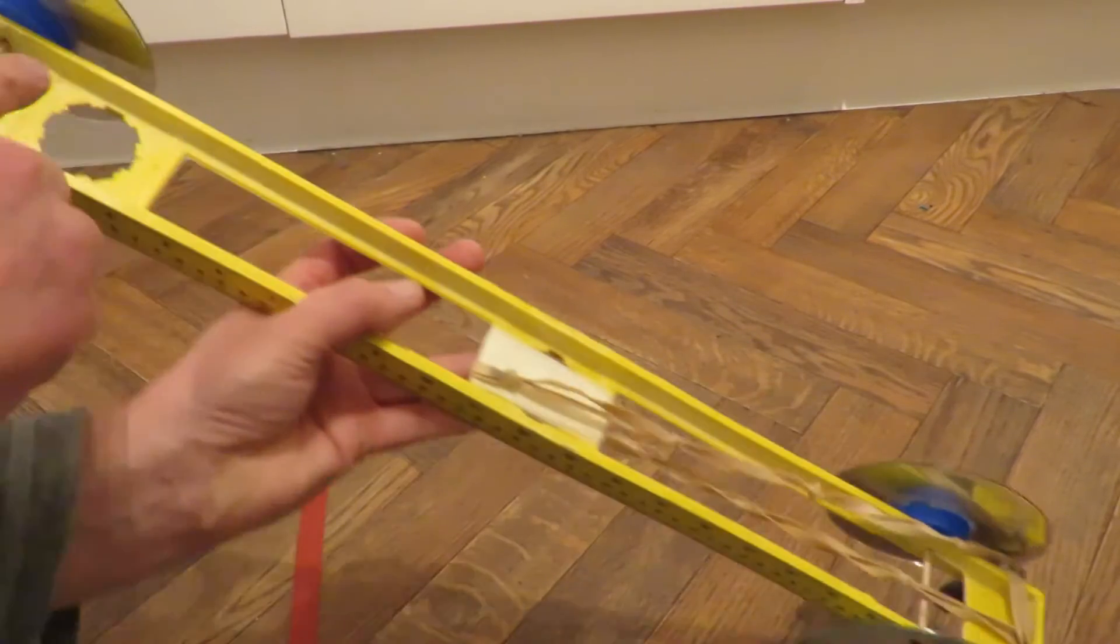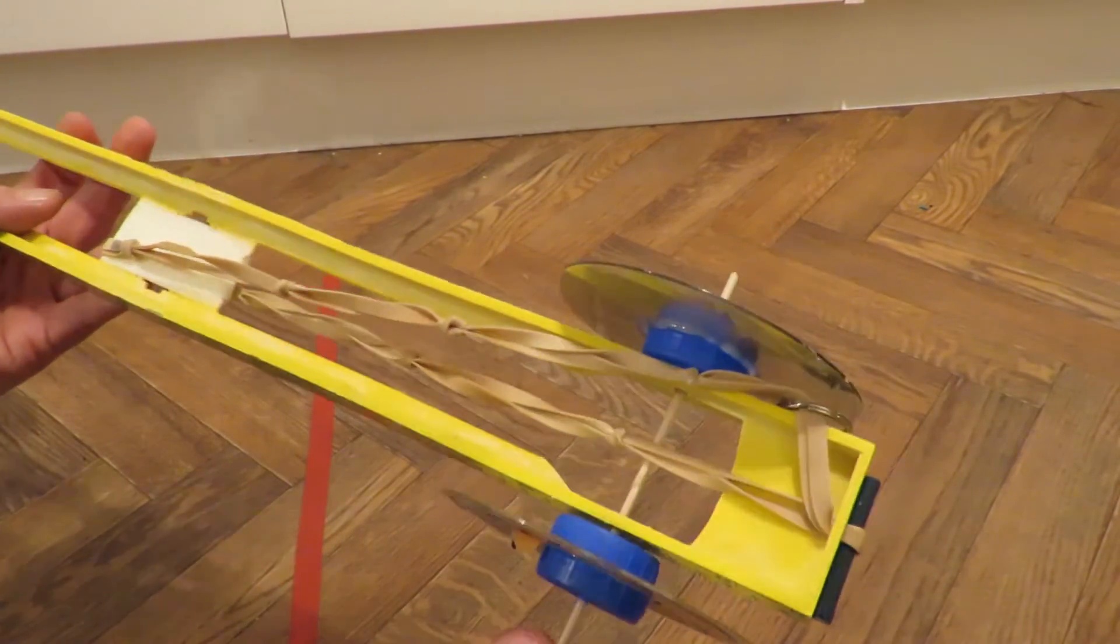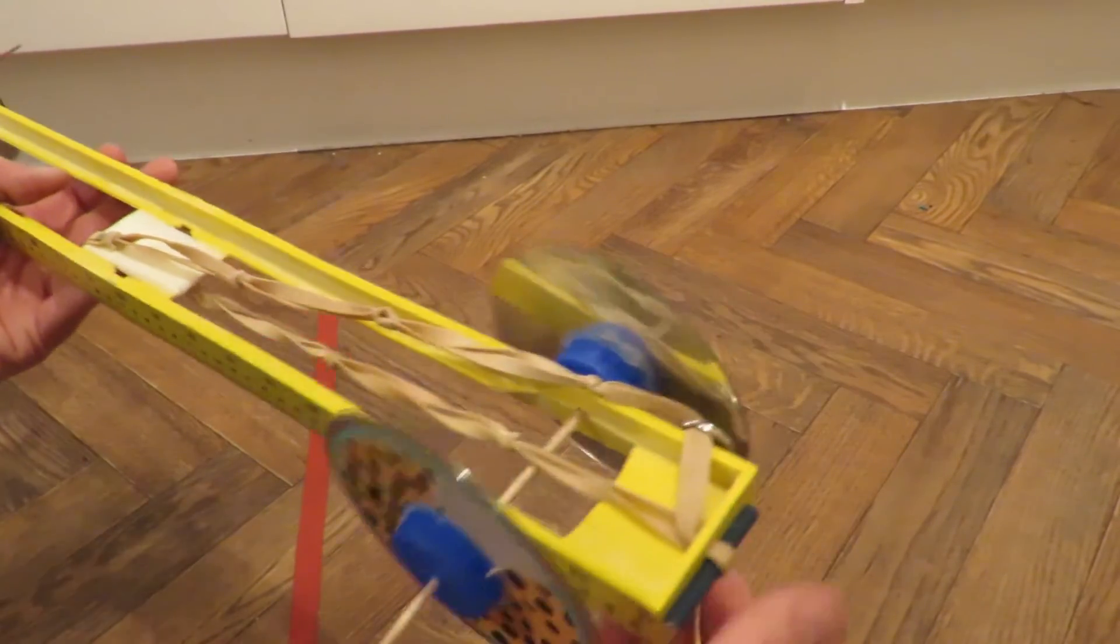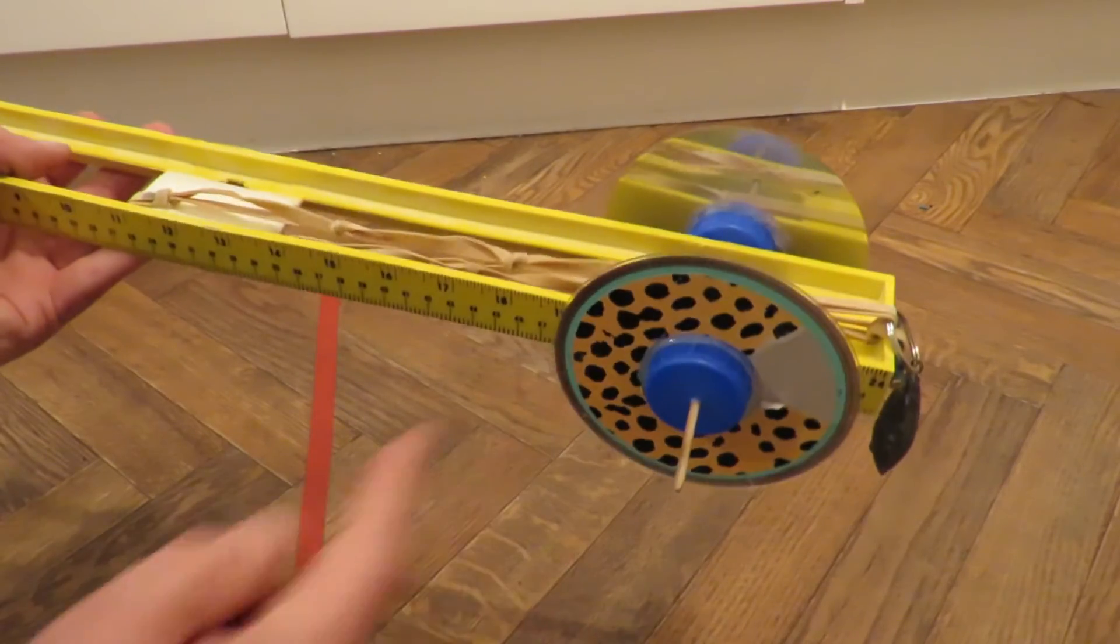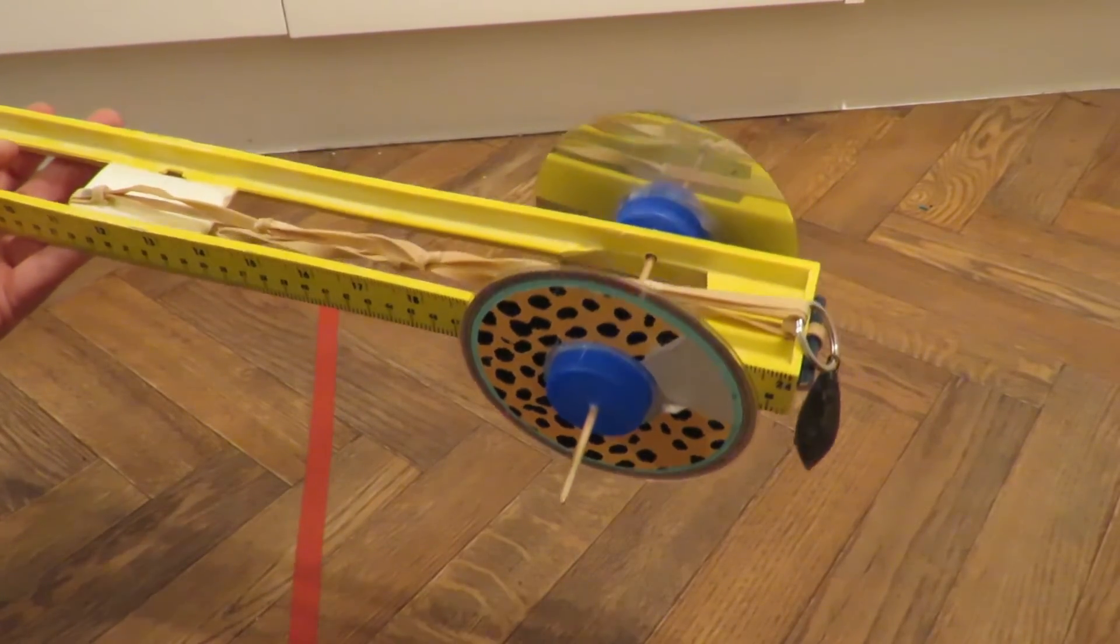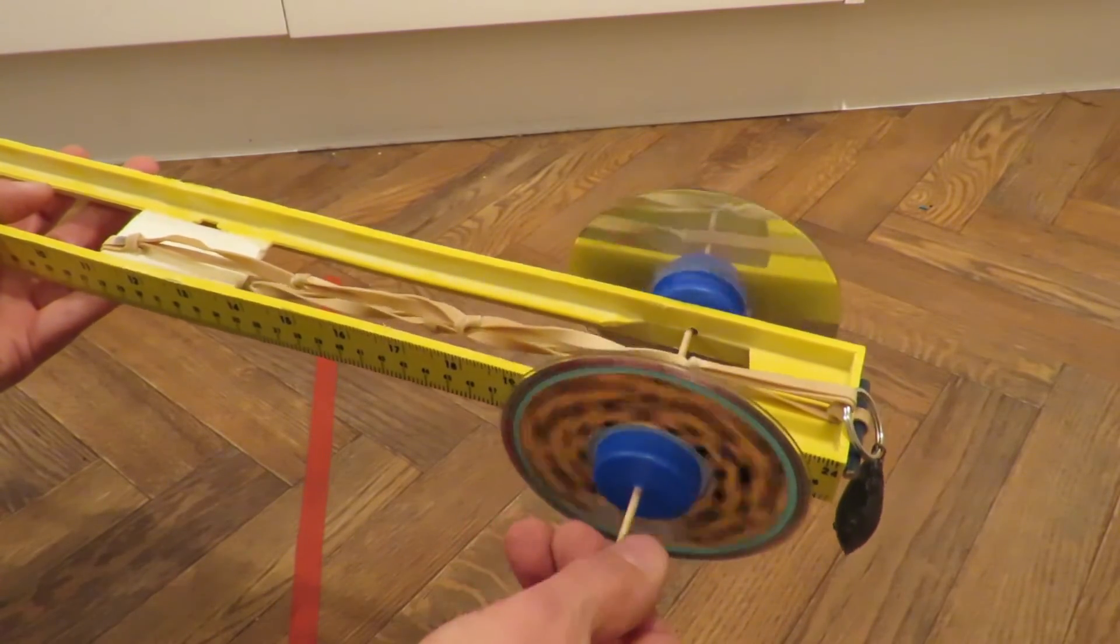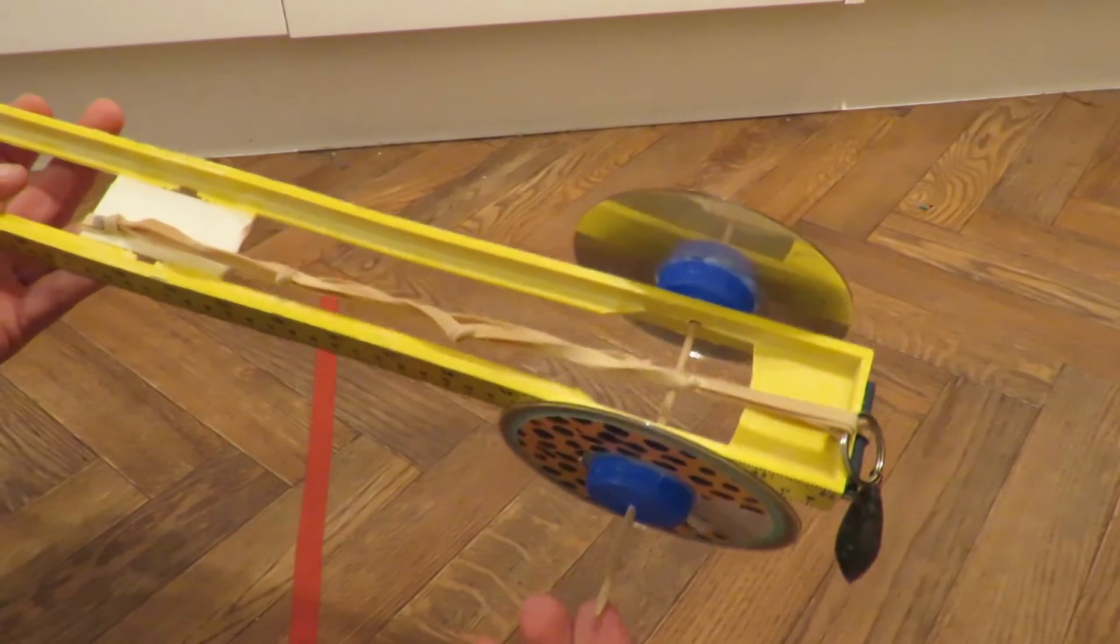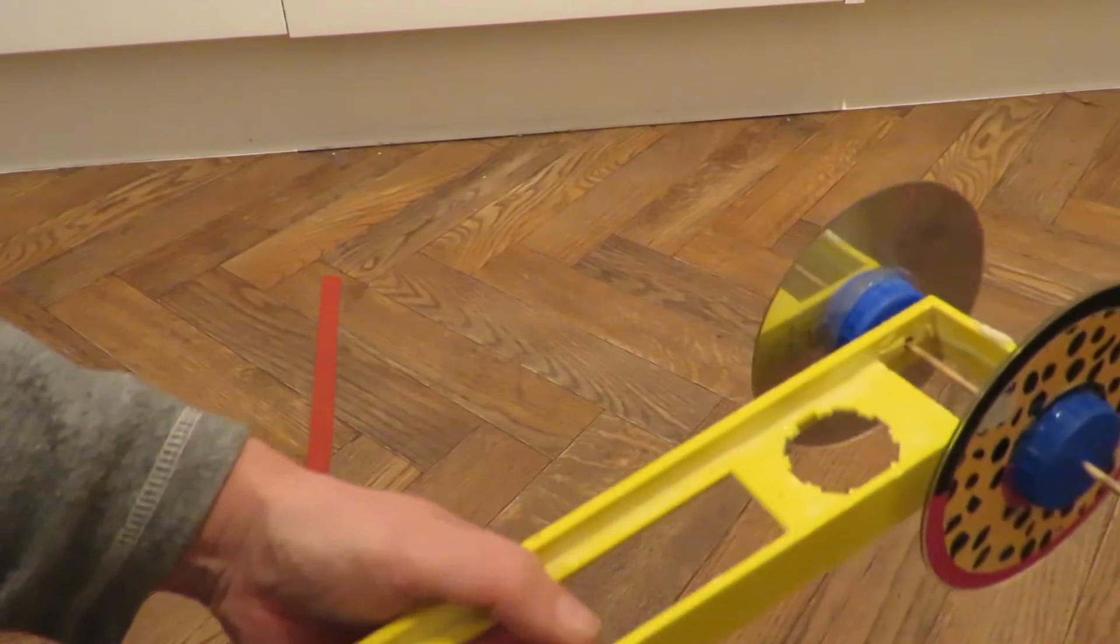I've drilled holes front and back for the axles to go through. The wheels are my normal CDs with plastic bottle caps hot-glued to the middle to act as the hubs. And the axles are barbecue skewers at both ends.